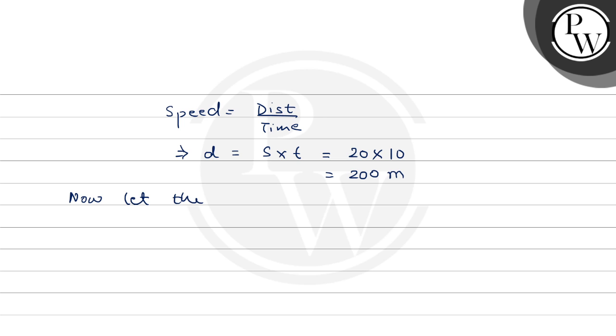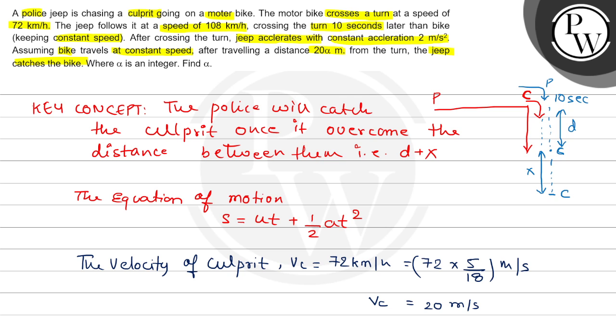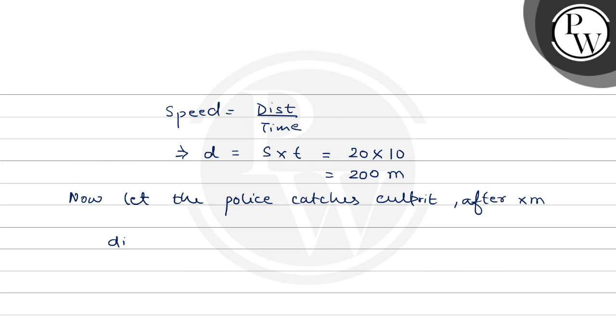Let the police catch the culprit after X meters. These X meters are after this travel is done. Here there was a condition that when the police turned, it started to increase its speed by constant acceleration. Distance covered will be X plus D meters. Acceleration will be 2 meter per second square.